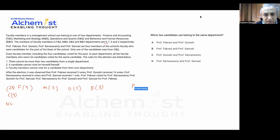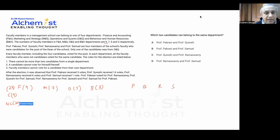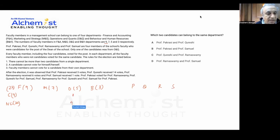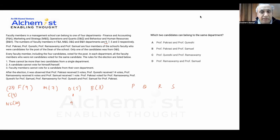These four people get the votes, and there are 20 non-candidates. Every faculty member including the four candidates voted. Only one of the candidates was from Operations (ONQ), so ONQ has one candidate and four non-candidates. Every faculty member voted, meaning there will be 24 votes total. All faculty members who are not candidates vote for the same candidate, so the block of non-candidates will vote together.